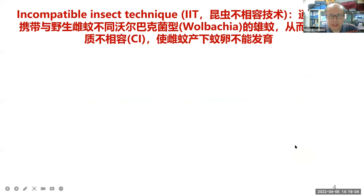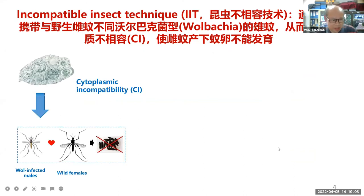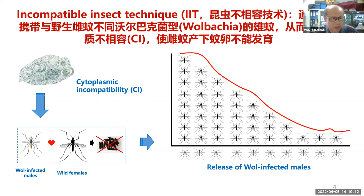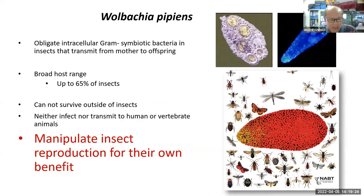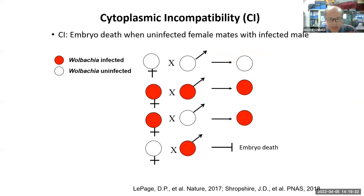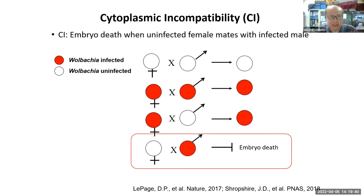Another technology is IIT — Incompatible Insect Technique. This is a new approach where we use a special bacteria. This bacteria can induce cytoplasmic incompatibility, or CI. If a male infected with the bacteria mates with a wild female, the eggs cannot hatch. We call this phenomenon cytoplasmic incompatibility, or CI.